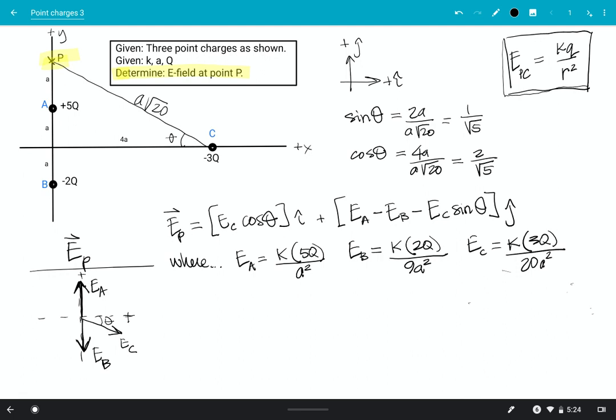So now I have all of my magnitudes. So now I'm ready to sub into this E sub P and make it like for real in terms of the givens. So E sub C here, I'm just starting with the I hat term and I'll clean it up slightly here as 3K Q over 20A squared times cosine theta. So that's going to be times 2 over root 5. That's all I hat.